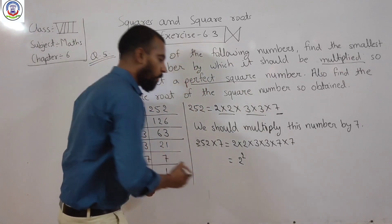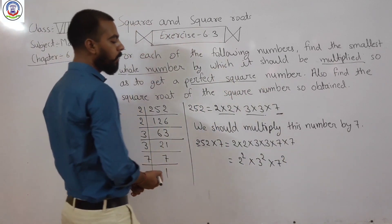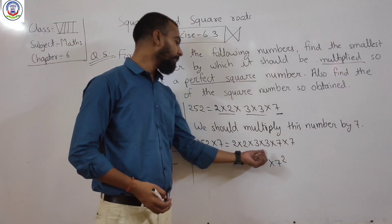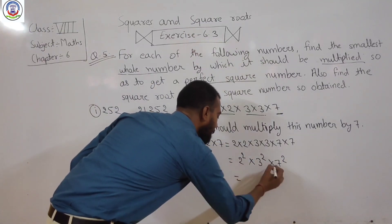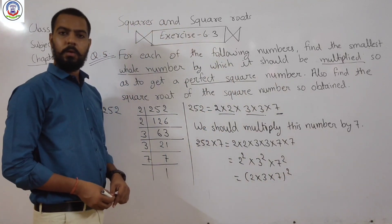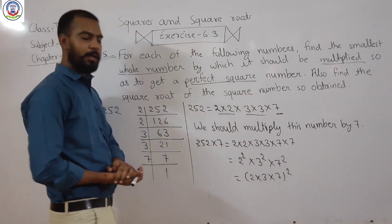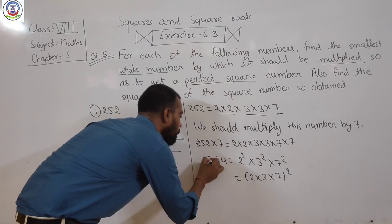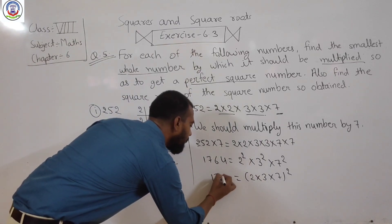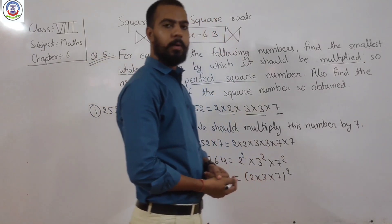So we have 2² × 3² × 7. Now you can see that the power of 2 and 3 are both 2, but 7 appears only one time — so we should multiply 252 by 7 to make it a perfect square, giving us 2² × 3² × 7², which equals 1764.